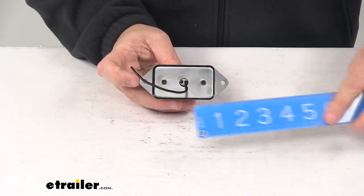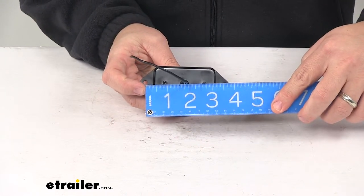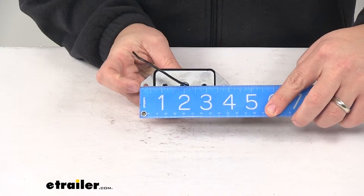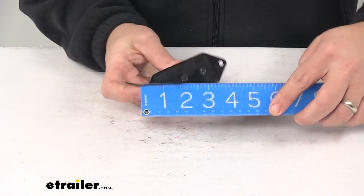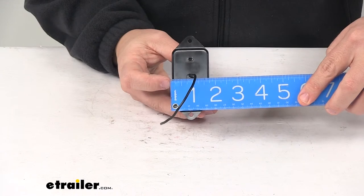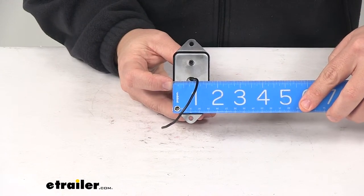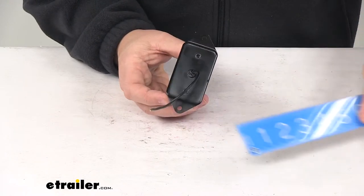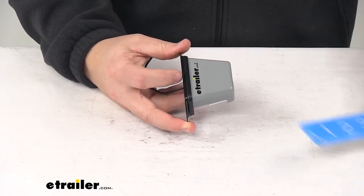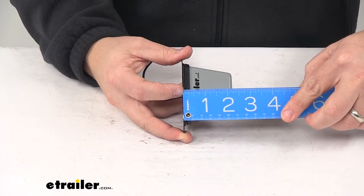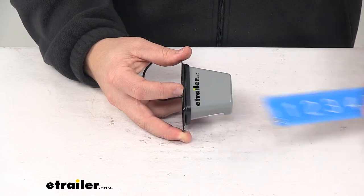The mount holes on the unit are separated apart from one another on center by 3 1⁄2 inches. Edge to edge, the base measures 4 inches by about 1 1⁄8 inches, and then from the very back of the unit to the very front of the unit gives us an overall depth of about 2 1⁄4 inches.